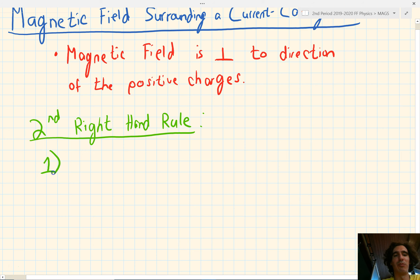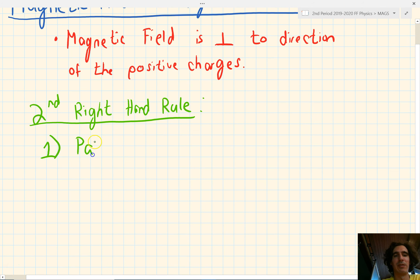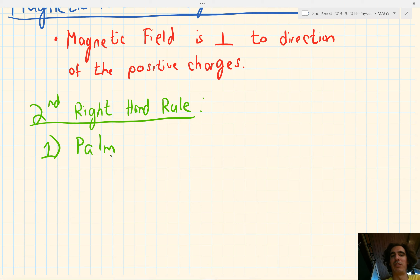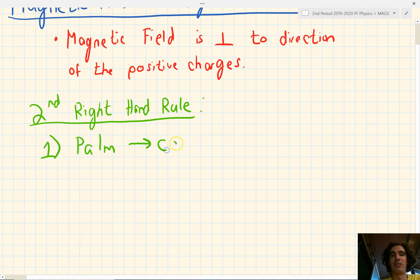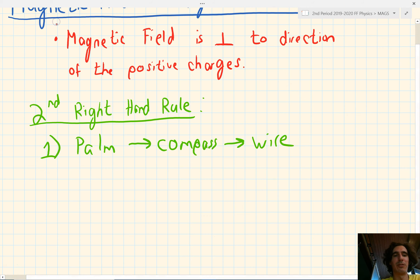Step one: we want to orient our palm so it touches the compass first. If the compass is on top of the wire, our palm is going to face into the page. If the compass is below the wire, our palm is going to face out of the page. So we first have to orient our palm, and our palm will then touch the compass, which will be either above or below the wire.